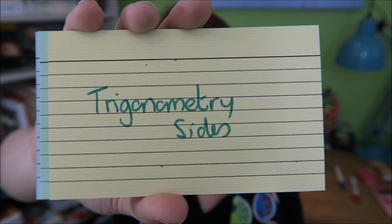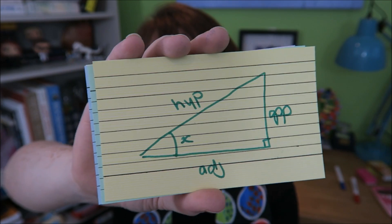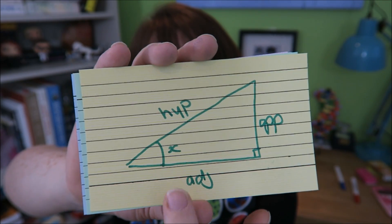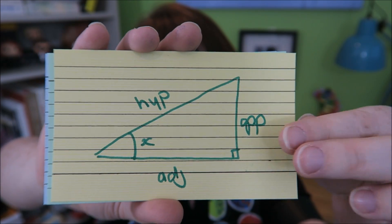Your sides in trigonometry, when you have a right-angled triangle. If this is your angle down here, your hypotenuse is the long one. Your adjacent is the one next to that angle. And your opposite is the one opposite that angle.